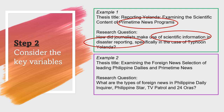In the second example, the thesis title is 'Examining the Foreign News Selection of Leading Philippine Dailies in Primetime News,' with the research question: What are the types of foreign news in Philippine Daily Inquirer, Philippine Star, TV Patrol, and 24 Horas? Foreign News Selection is a key variable, and Philippine Star, Daily Inquirer, TV Patrol, and 24 Horas form another variable.